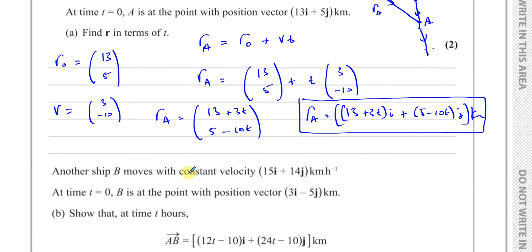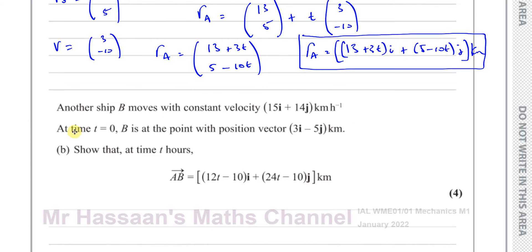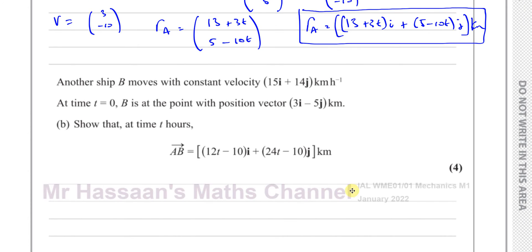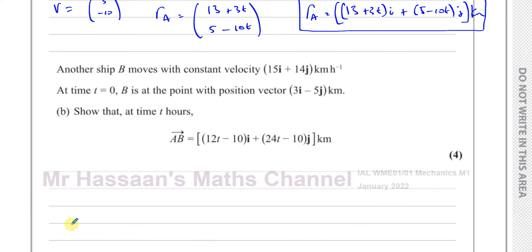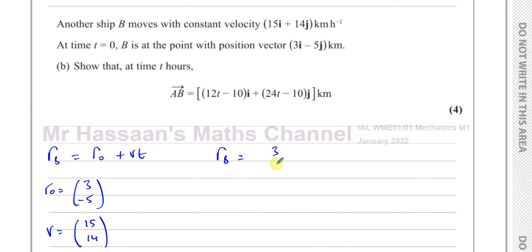For part B, another ship B moves with constant velocity 15i plus 14j kilometers per hour. At time T equals 0, B is at the point with position vector 3i minus 5j. We need to show that at time T hours, the vector from A to B is given by a specific vector. First, I need to find the position vector of B. RB equals R0 plus Vt. R0 for ship B is (3, -5) and the velocity vector is (15, 14).